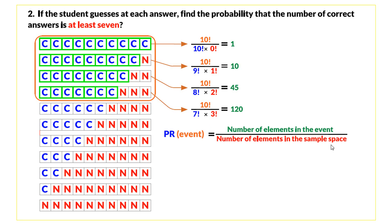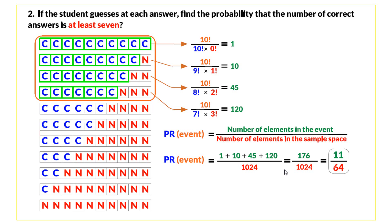We now apply the probability formula, knowing all these events are disjoint. The probability of at least seven questions answered correctly is the sum of the probabilities of each individual event: 1/1024 + 10/1024 + 45/1024 + 120/1024. This gives 176/1024, which simplifies to 11/64, equal to approximately 0.17. This means that if we take this test around 100 times, we have around 17 chances of passing with at least seven correct answers.